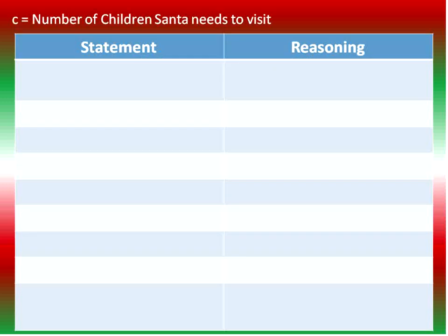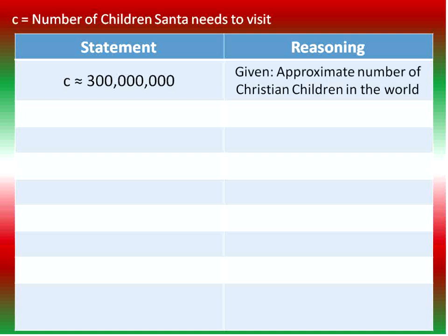With the math proof, you have your statement on the left and your reason on the right. We'll start out with C being the number of children Santa needs to visit — that's about 300 million, just an approximate number of Christian children in the world.